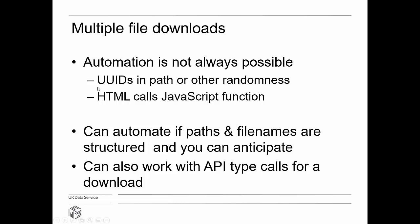With coding we can also automate the download. If we wanted multiple files, we could find a way of downloading them all together. Automation isn't always possible — some locations put UUIDs or random hexadecimal strings in the path, making it impossible to predict what other files in a series might be. Another problem is JavaScript functions used as download buttons. We need to be able to get hold of the actual file name and path, and then we can do a fair job automating.